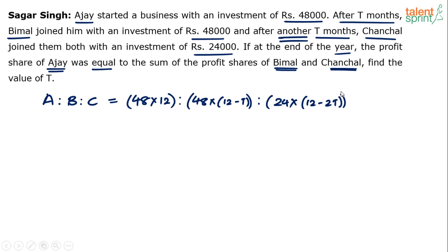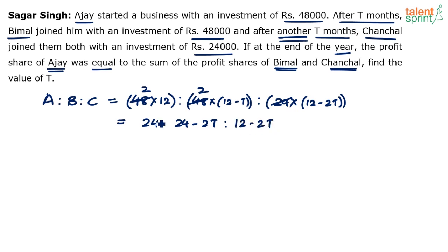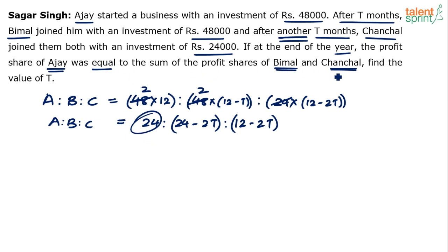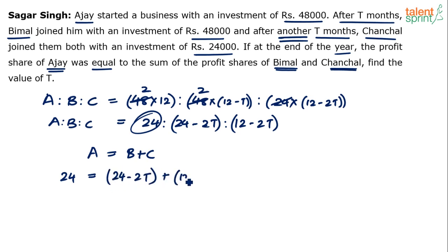Simplifying the ratio: 24 is common in the first two terms, giving us 2 × 12 = 24, to 2 × (12 − T) = 24 − 2T, to 12 − 2T. So the profit ratio is 24 : (24 − 2T) : (12 − 2T). Since Ajay's share equals the sum of Bimal's and Chanchal's shares, the equation is: 24 = (24 − 2T) + (12 − 2T).